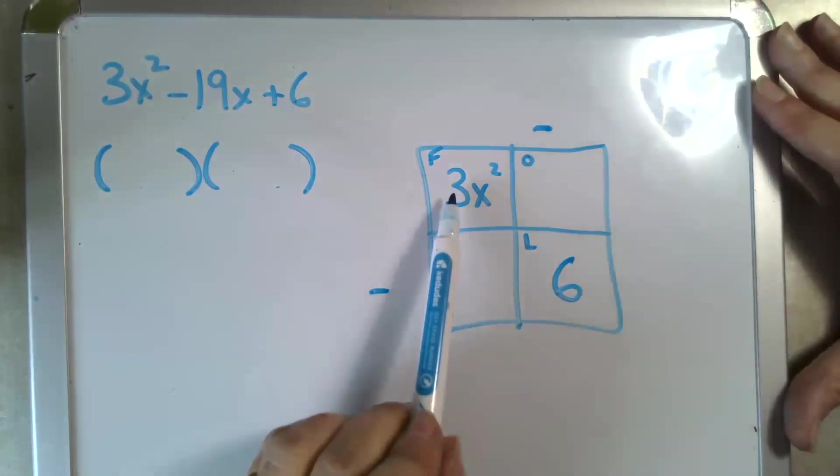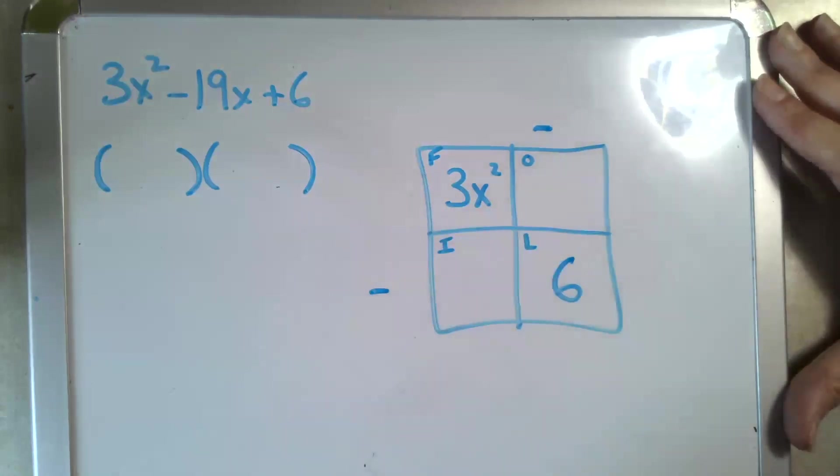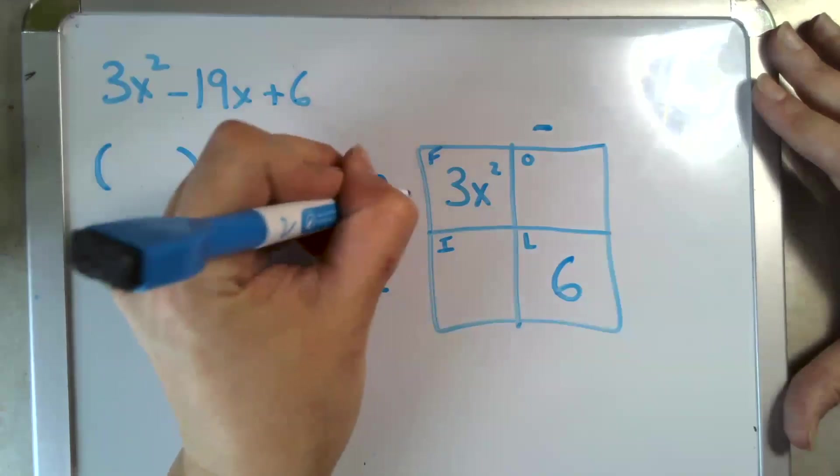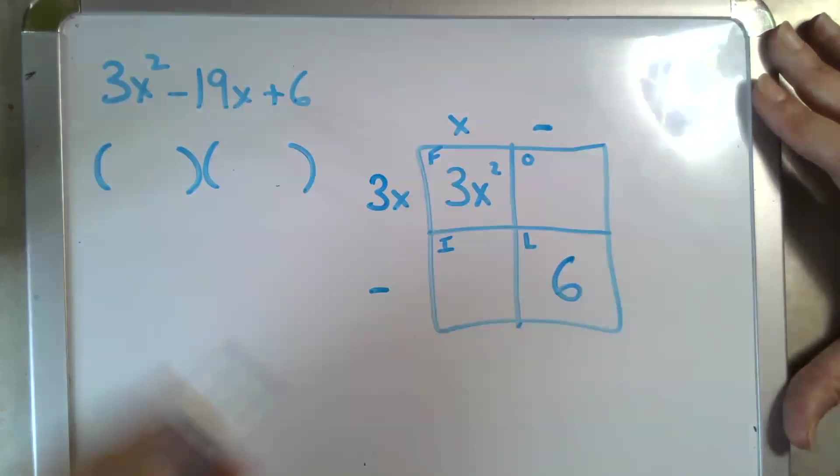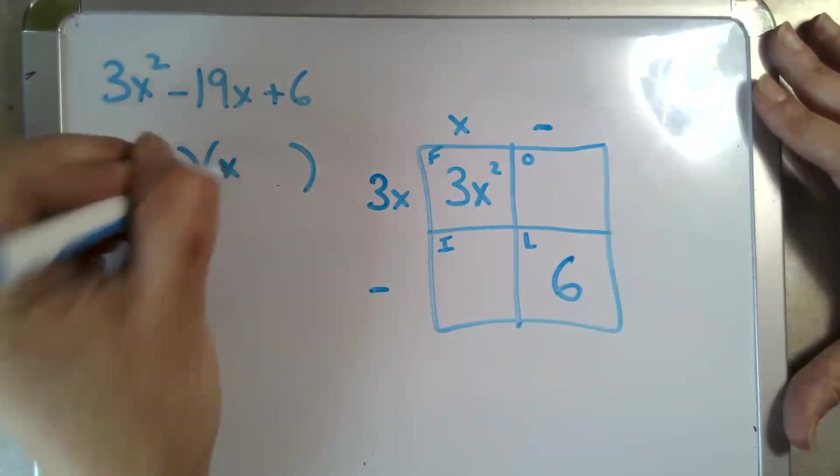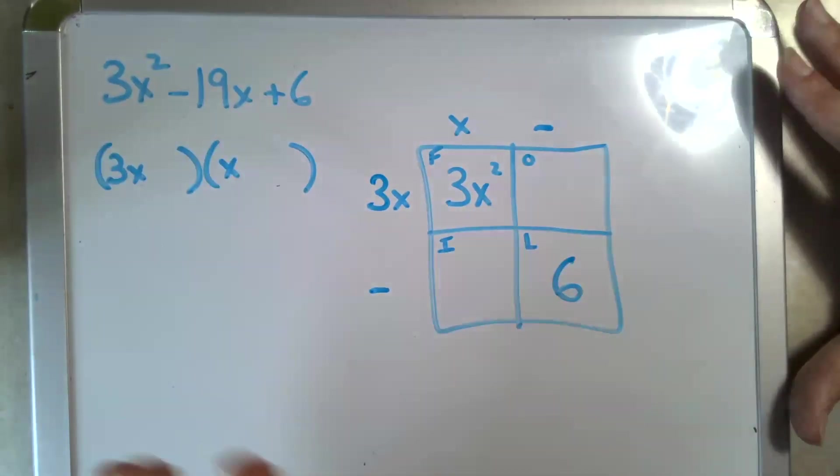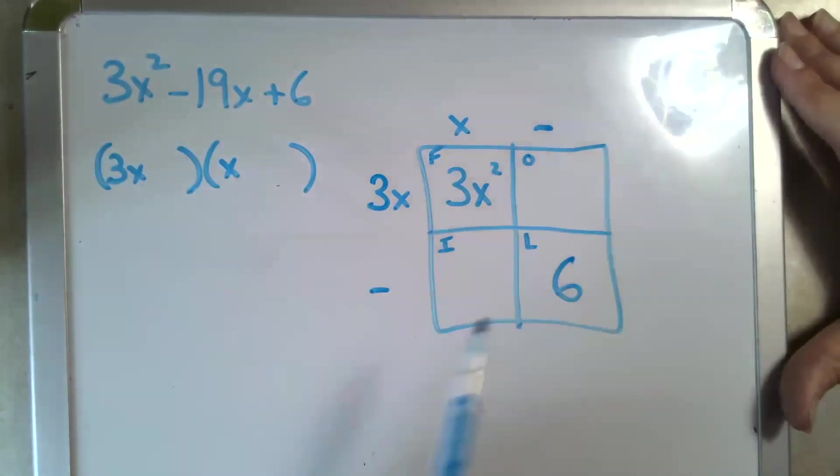So for 3x², how do we create that through multiplication? 3x times x. We know those will be the first terms in the parentheses, and it doesn't matter where we put them.